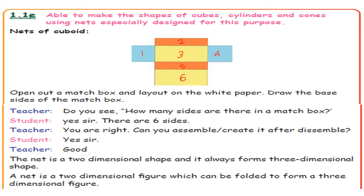The net is a 2-dimensional shape and it always forms a 3-dimensional shape. It is like a plan on a plain paper. If you fold it, it will become a 3-dimensional shape from a 2-dimensional shape. A net is a 2-dimensional figure which can be folded to form a 3-dimensional figure.